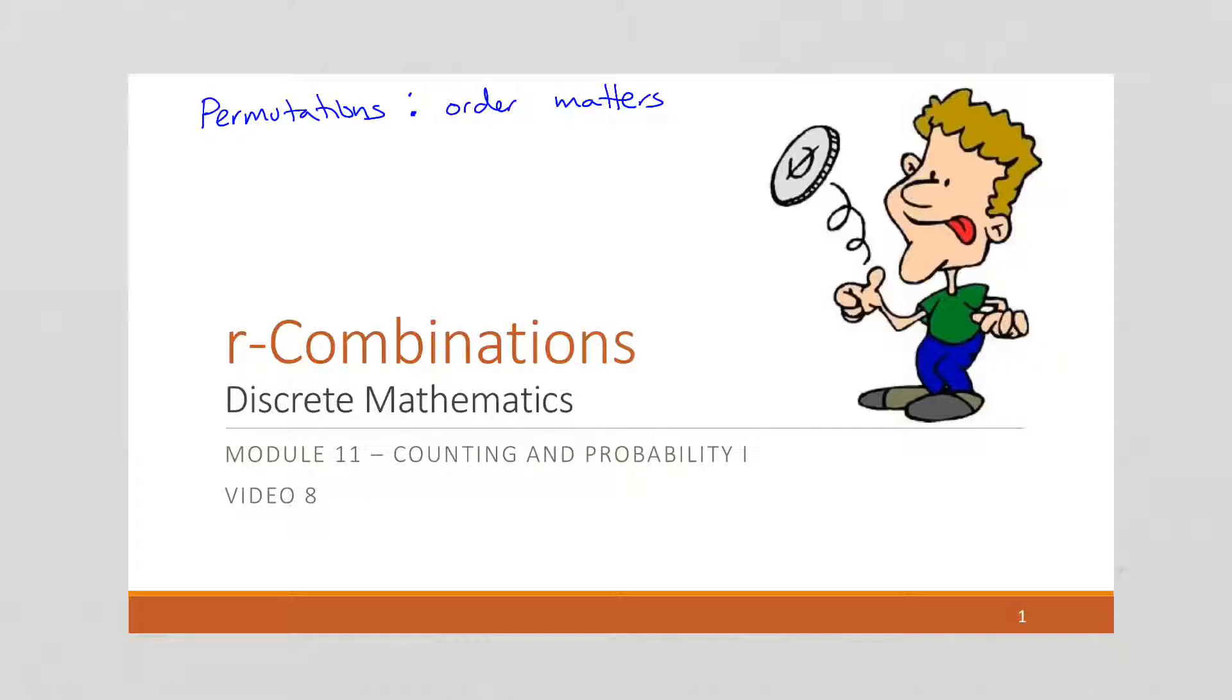The number of anagrams - how many ways can I rewrite this word - the order's going to matter because each ordering is an anagram. With combinations, order no longer matters. That's why we go straight to the r-combinations. If I have a group of 100 people, how many ways can I grab five of them? The order isn't going to matter anymore, and that's a combination.